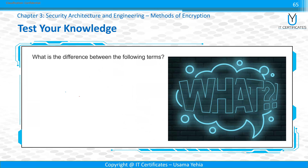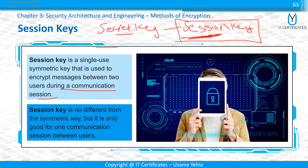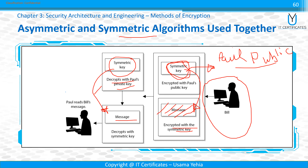Here is a diagram showing how this works: you create a random key, encrypt it with the recipient's public key, and send the encrypted message along with it. The session key is created, encrypted with the receiver's public key, and the receiver uses their private key to decrypt it, then uses the session key to decrypt the actual message.